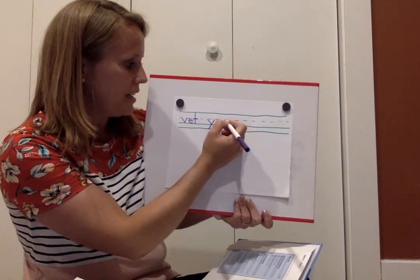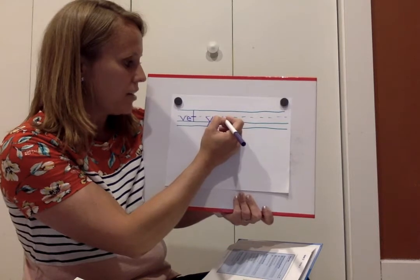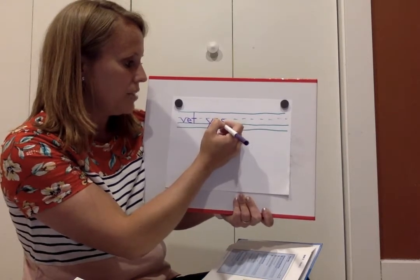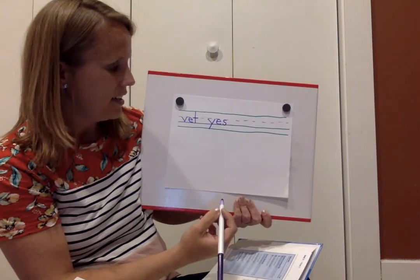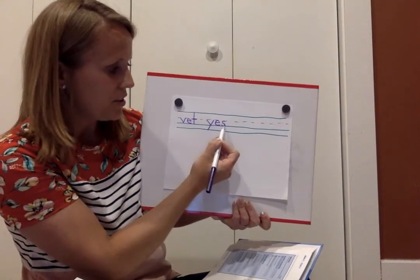S, start on the plain line, go back on the plain line, curve in around and land on the grass line. S. You spelled yes.